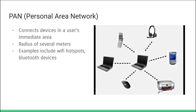The next type is a personal area network, or PAN. It connects devices in a user's immediate area — basically a LAN with a much smaller radius. Examples include Wi-Fi hotspots and Bluetooth devices. When you allow your AirPods or phone to connect to your laptop via Bluetooth, that is technically a personal area network.